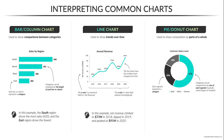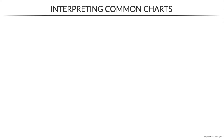My stance is that pies and donuts are perfectly valid under the right circumstances — which is that you show no more than three or four segments, you use clear data labels, and you sort your categories in descending order. So interpreting this example, we see that more than half of our customers, 57%, have gold status, followed by silver at 25% and bronze at 18%.